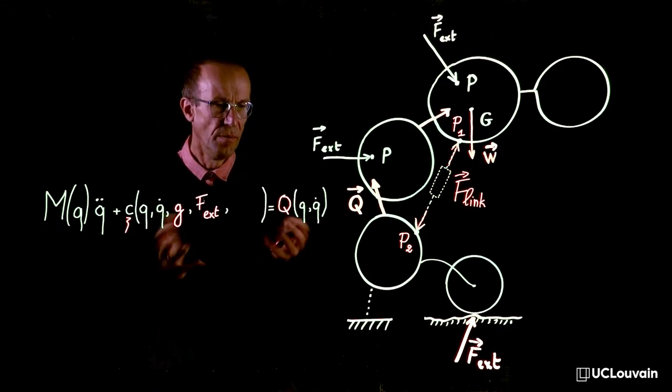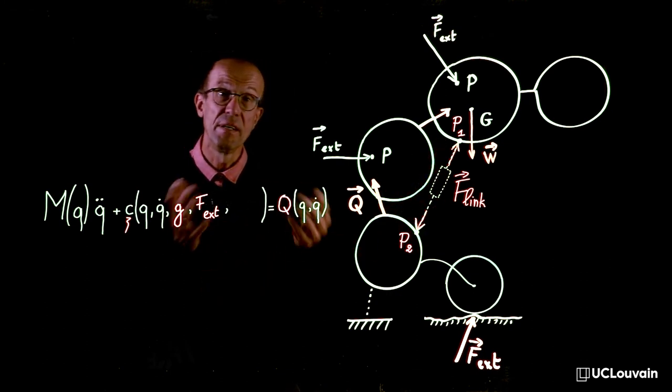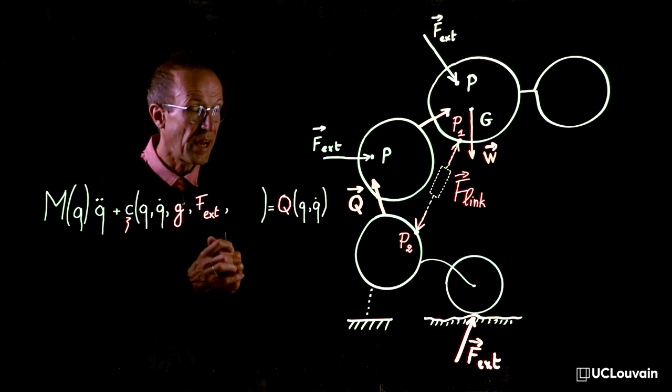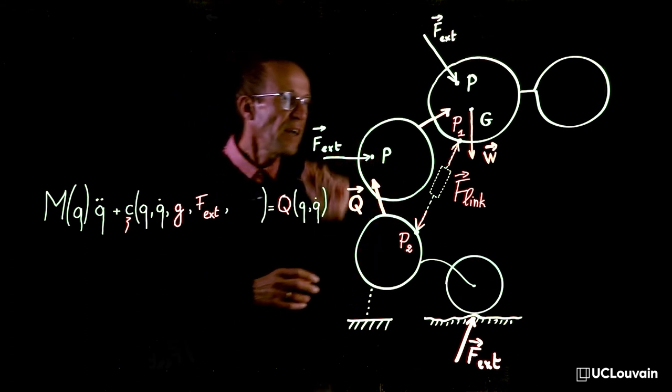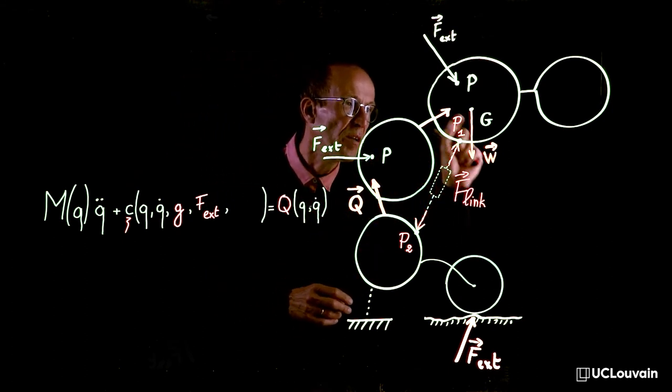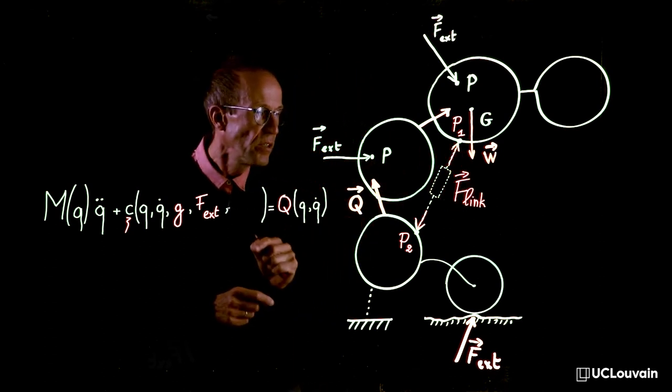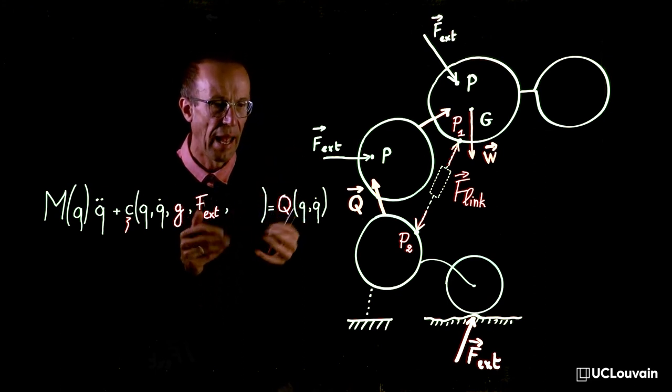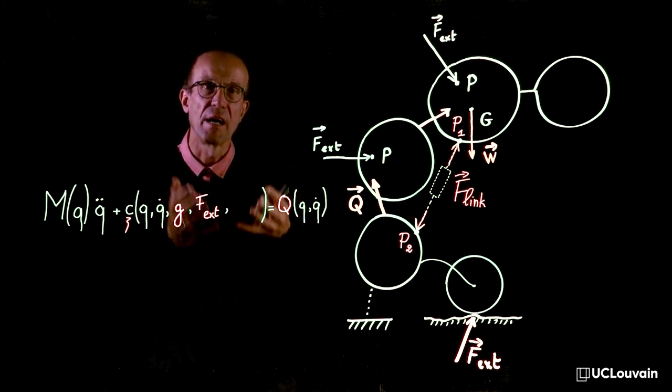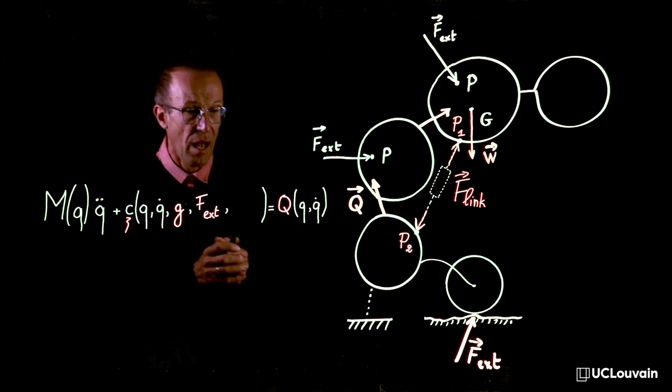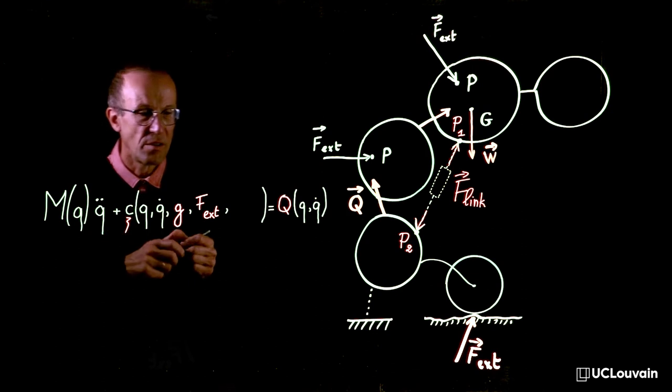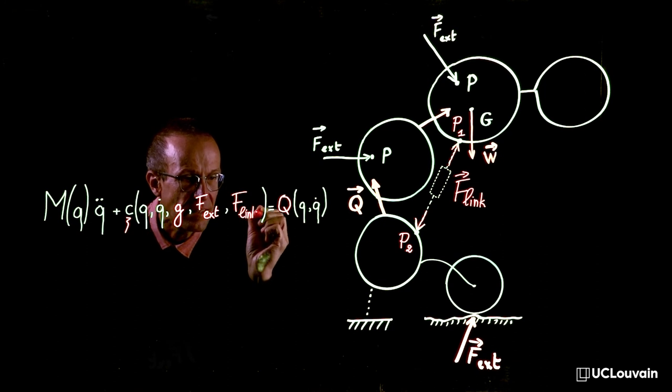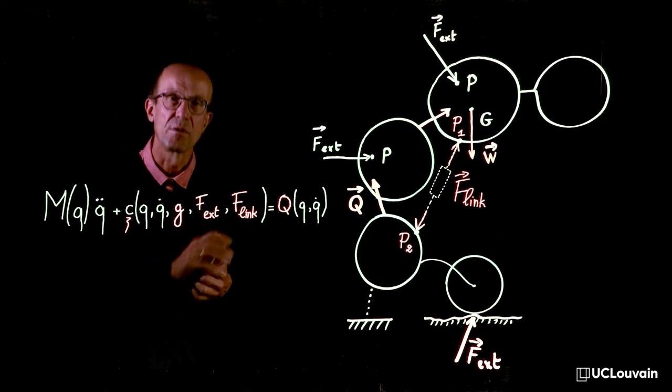One could wonder where the link forces do intervene in the equations. The answer comes from the way they are treated in our approach. The action, let's say the one acting at p1, and the reaction, let's say the one acting at p2, are internally treated as two opposite external forces. And thus, they also will belong to the c vector, exactly as standard environment forces.